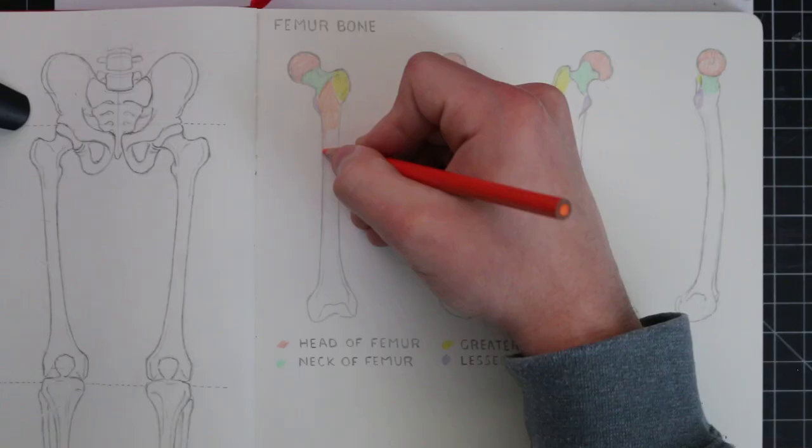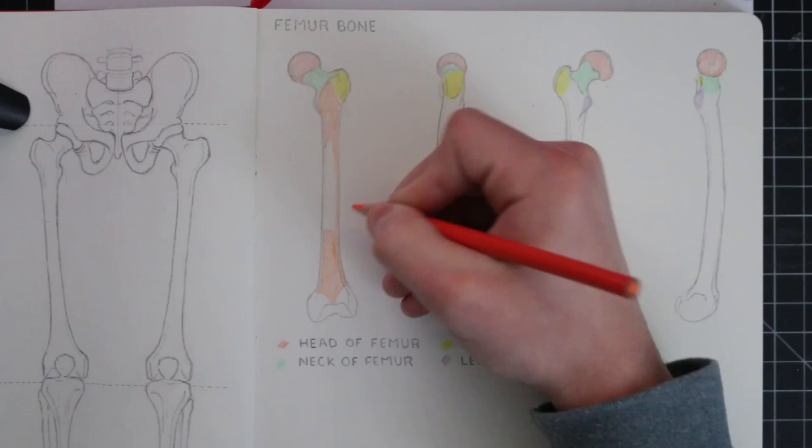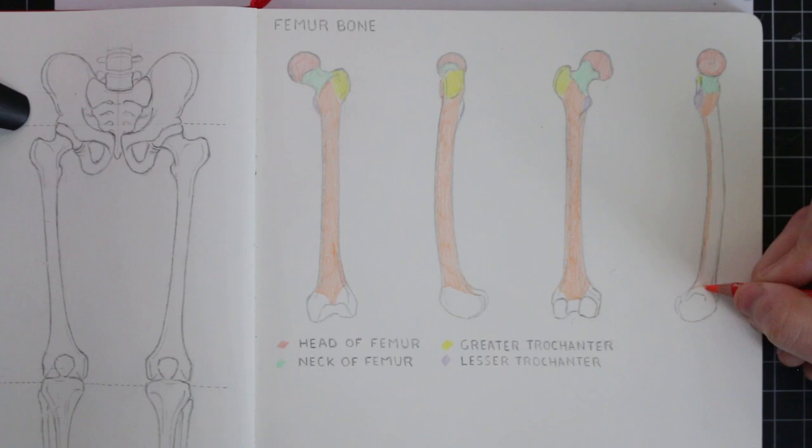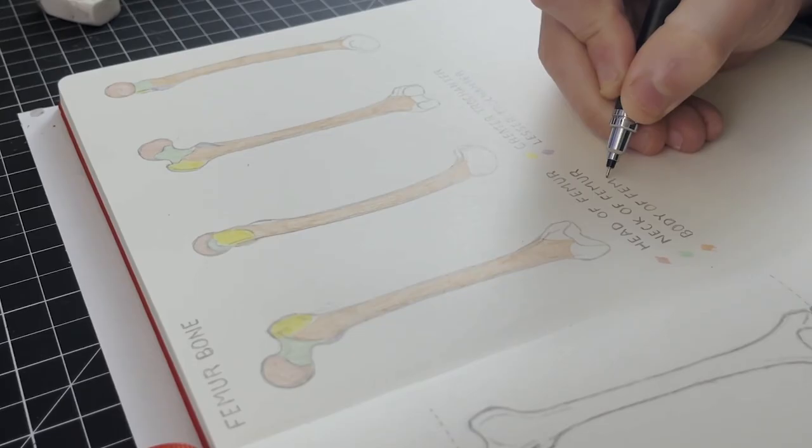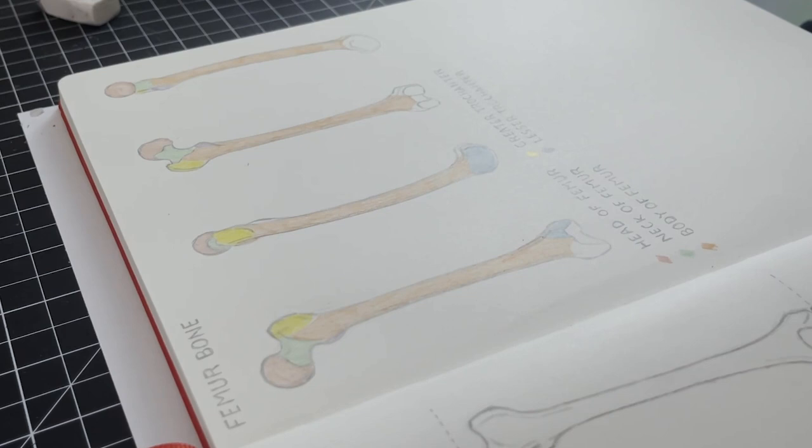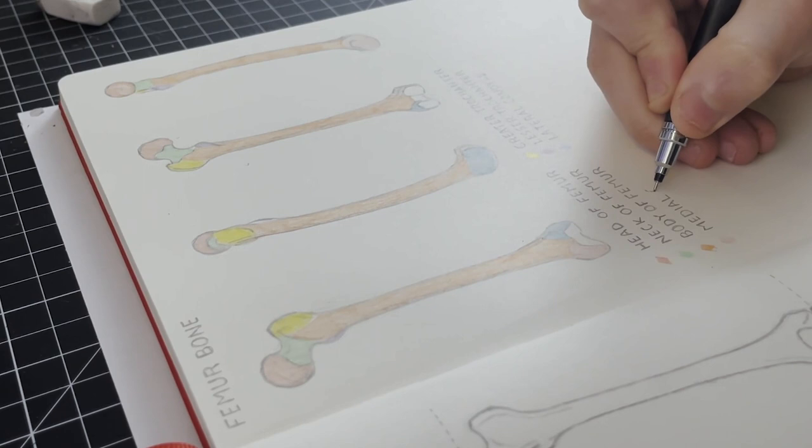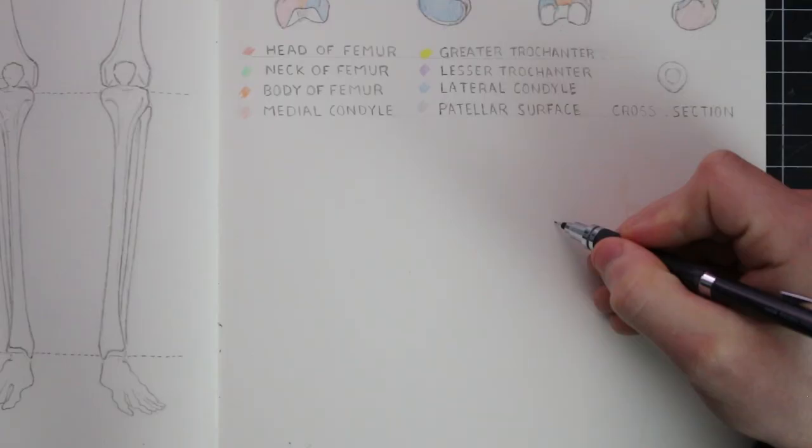Next there is the body of the femur, obviously being the largest section of the femur bone, and in a cross section you can see the bone is close to being cylindrical. At the bottom of the bone, the round protrusions on either side are referred to as the lateral and medial condyle. Finally there is the patellar surface, the concave surface between the lateral and medial condyle. This joins the patella which is something that we'll look at later.